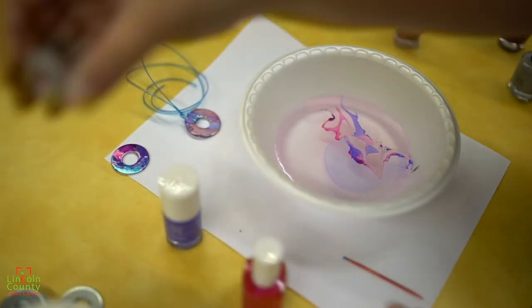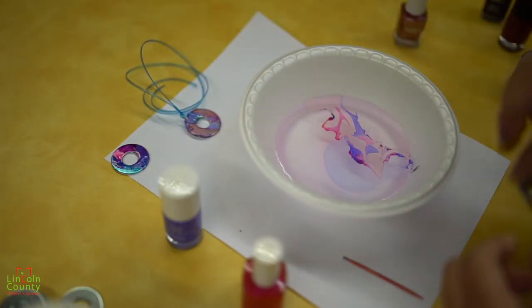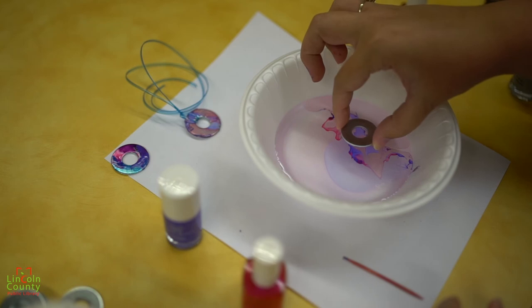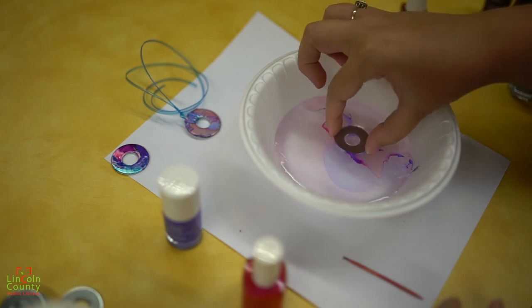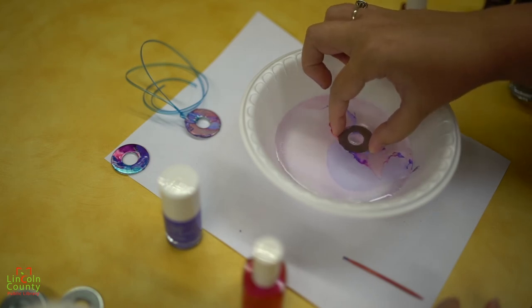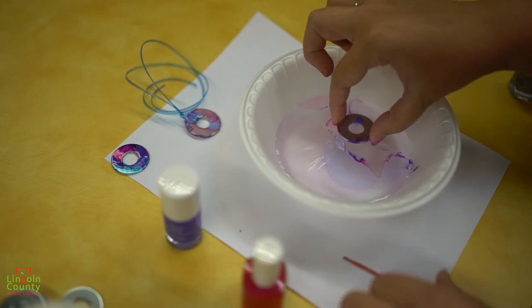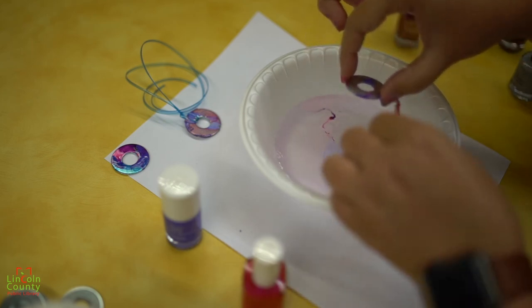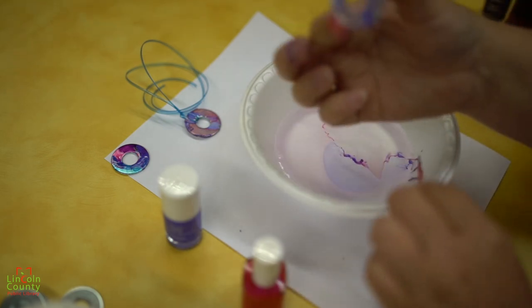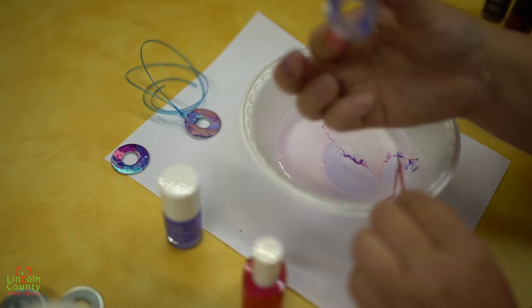You will take the washer and you will gently dip it in the water. Kind of shake it about and then pull it up. And as you pull it up the print should stay on the washer.